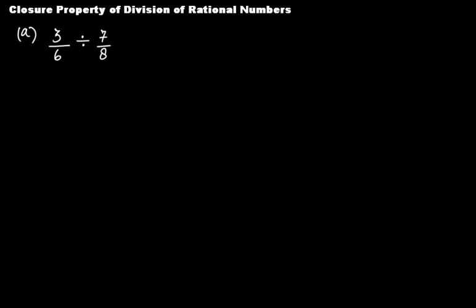Let's discuss whether rational numbers are closed under division or not. It means if we take two rational numbers a and b and divide them, then is the quotient or result of this division a rational number or not.